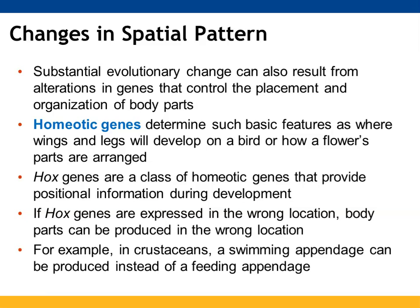We can also have significant evolutionary change as a result of where body parts are placed and their organization, controlled by homeotic genes. Homeotic genes determine where wings and legs will develop on a bird, or how a flower is organized. Hox genes are a specific class of homeotic genes that provide positional information during development. If they get expressed in the wrong location, you can have body parts attached to the wrong location — for example, with crustaceans, a swimming appendage could be produced instead of a feeding appendage.